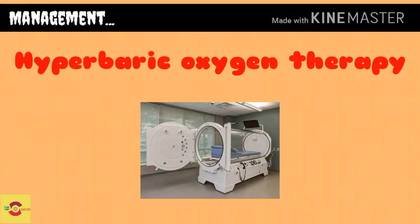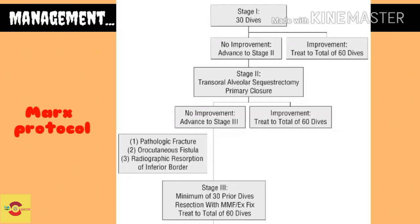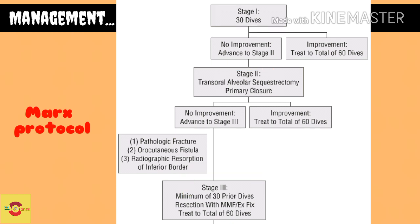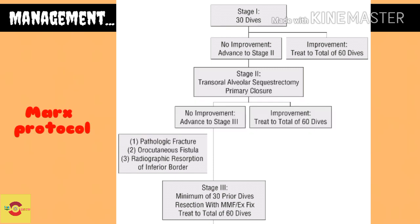The main mode of treatment in ORN is hyperbaric oxygen therapy. According to Marx's protocol, treatment is staged as Stage 1, 2, and 3. Stage 1 consists of a total of 30 hyperbaric oxygen exposures at 2.4 atmospheres absolute pressure (ATA) for 90 minutes in a multi-place chamber, or 2.0 ATA for 120 minutes in a monoplace chamber. Patients with improvement are labeled as Stage 1 responders.